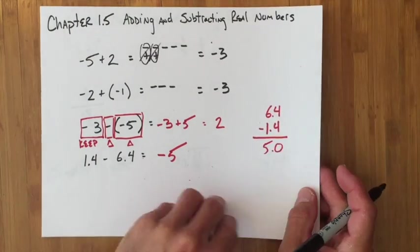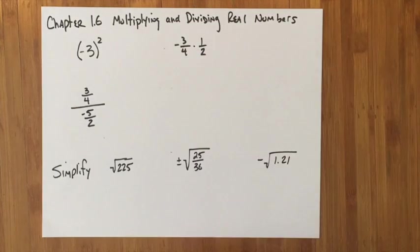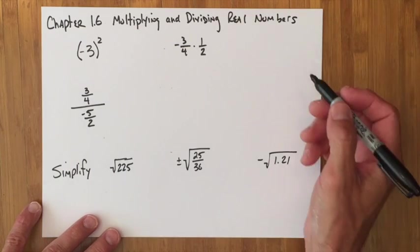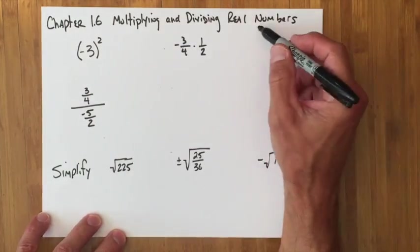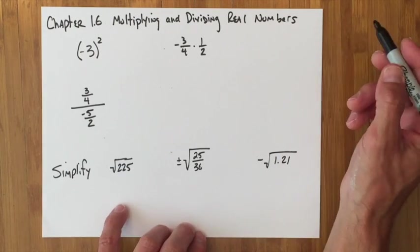Once again, we're going to leave that one and go right into 1-6. Section 1-6 is essentially the same thing, it's just rules that you've already learned in the past. The rules for multiplying and dividing real numbers are the same as the rules for multiplying and dividing integers.